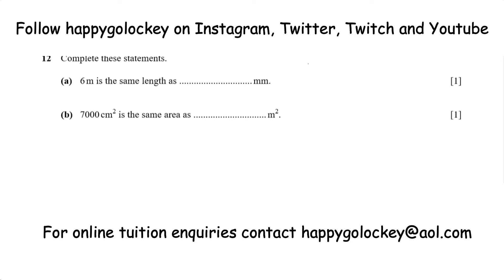The question goes as follows. Complete these statements. Part A: 6 metres is the same length as how many millimetres. Part B: 7,000 centimetres squared is the same area as how many metres squared. One mark for each question.